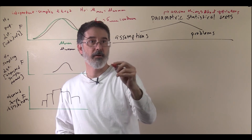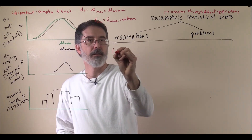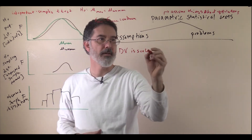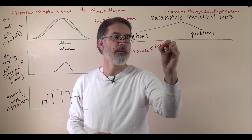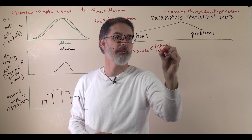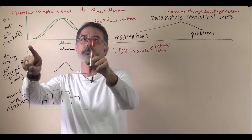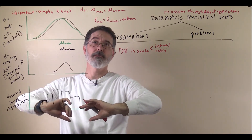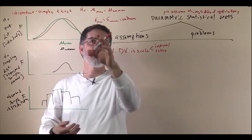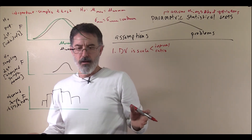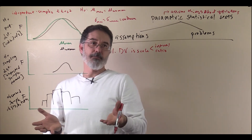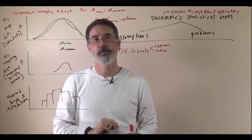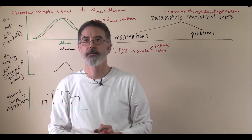The first assumption of all these parametric tests is that the dependent variable is scale — that means interval or ratio scale of measure. For example, I have put up an independent samples t-test here. We are saying men and women are the same, which is what the null hypothesis says. So if this is height, the scale of measure for the dependent variable would be ratio, because height is a ratio variable.